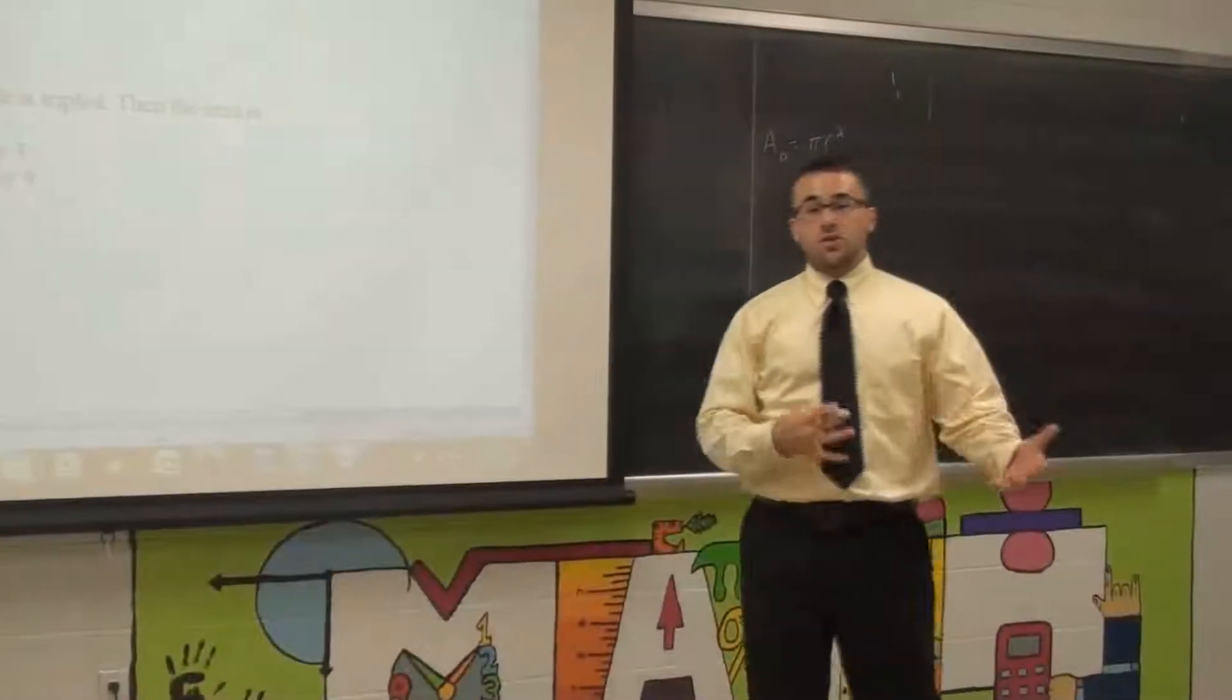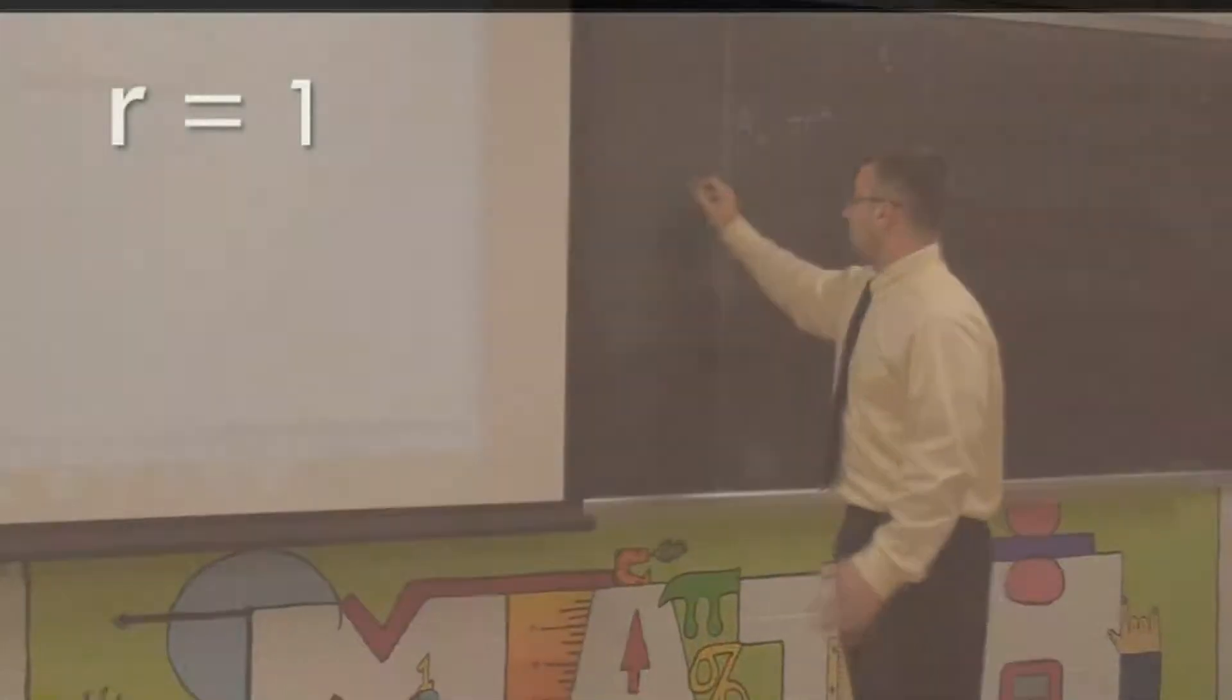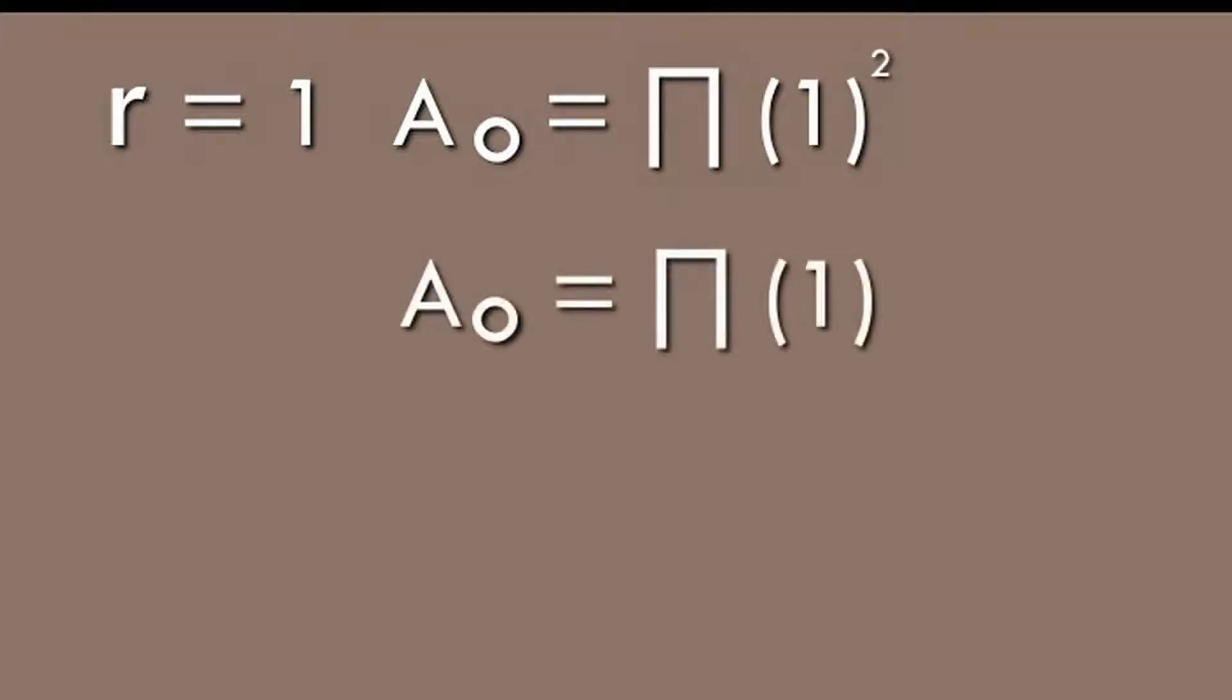Now the easiest number to work with is always one or two, so let's start with one. So if I have a radius of one, I merely would substitute in my radius of one. I have my area of my circle that is pi times one squared. One squared is one times pi is just pi.